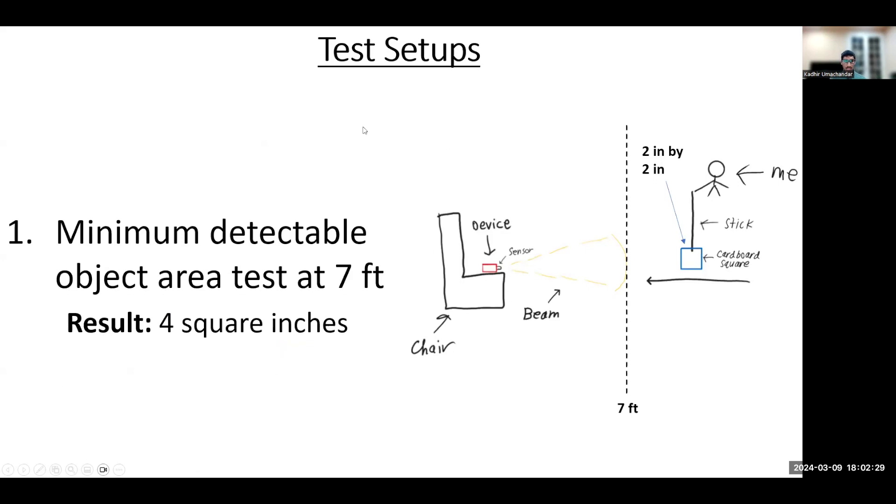So next for test steps I first wanted to find the minimum detectable object area at 7 feet. So I taped cardboard squares of various sizes to a stick and I moved it towards the sensor to see if it was detected at the target distance of 7 feet. And through this experiment I found that the minimum detectable object area was 4 square inches.